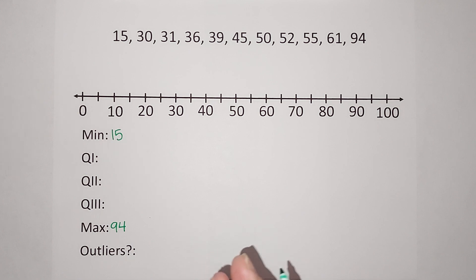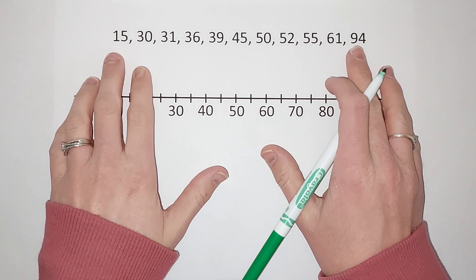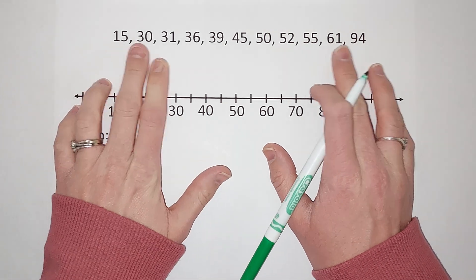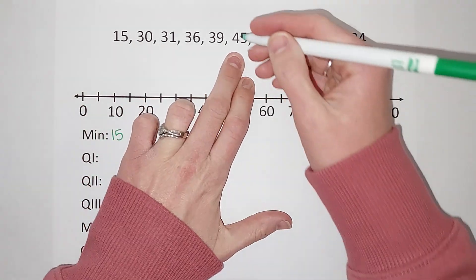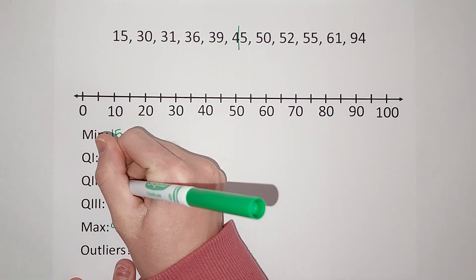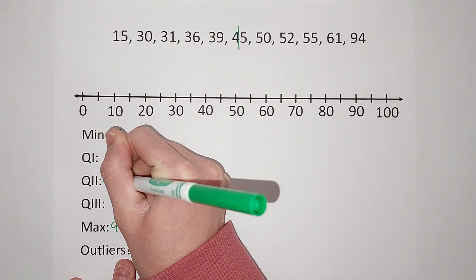You probably have experience finding quartiles. If not, I'll link a video in the corner. Quartile 2 is my median. All I do is count to the middle, so my quartile 2 is 45. If there hadn't been one number in the middle, if there had been two, you add them together and divide by two to get their average.